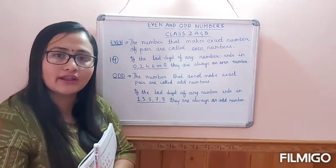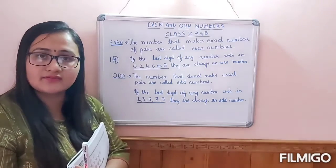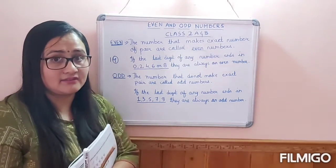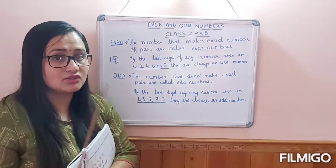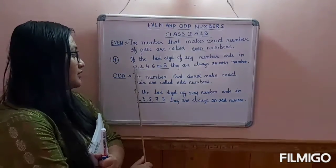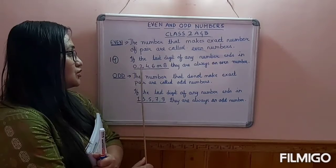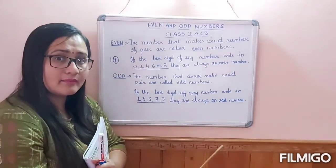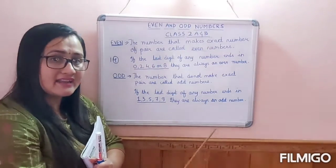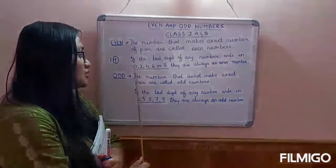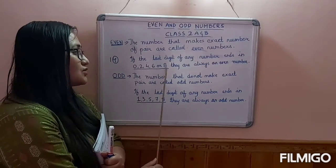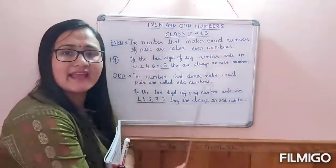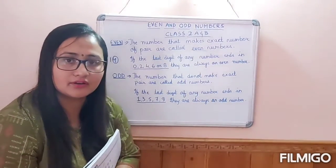And it goes on and on. 20 is also an even number. 21 is not an even number because it is not ending with either 0, 2, 4, 6, or 8. All the numbers which are ending with 0, 2, 4, 6, or 8 are always an even number.